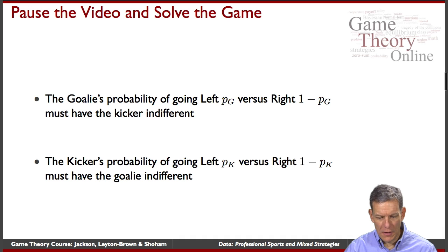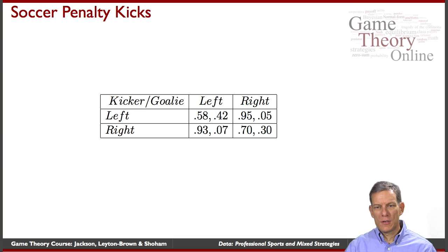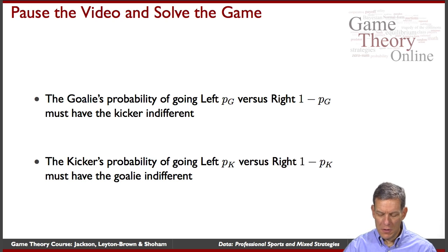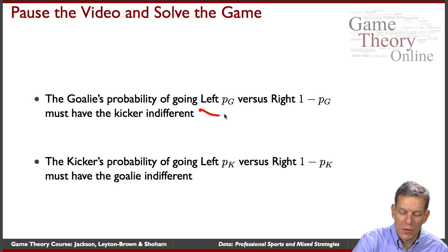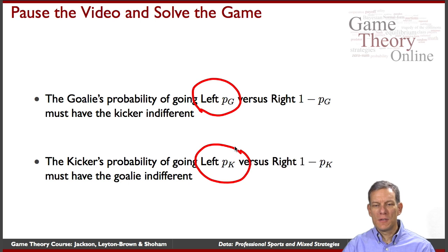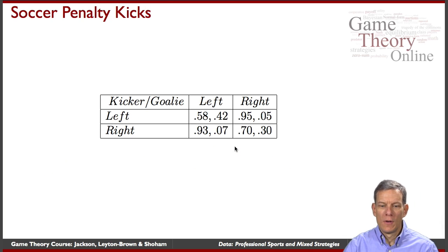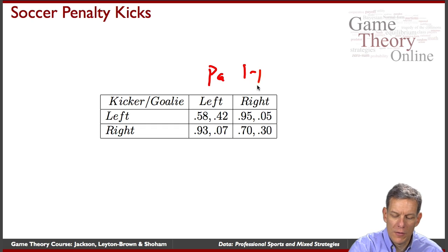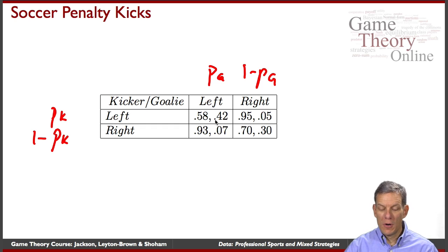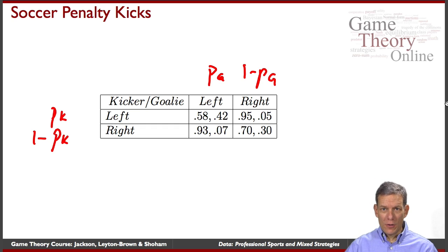We have to see whether we end up with the Nash equilibrium in this game. Given those numbers, you can pause the video and solve the game. Try to figure out the probabilities: the goalie goes left with probability P_G, the kicker goes left with probability P_K. Solve for P_G and P_K using this matrix — placing P_G and 1 minus P_G for the goalie, P_K and 1 minus P_K for the kicker — and find the mixed strategy Nash equilibrium.